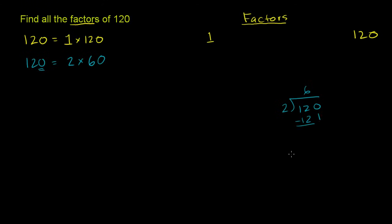So we have two more factors. The next lowest one is 2, and the next highest factor from the large end is going to be 60.